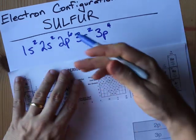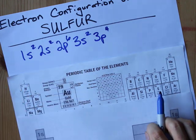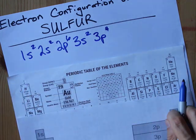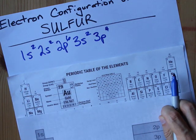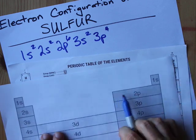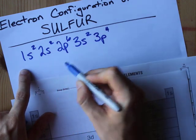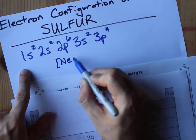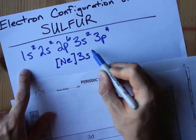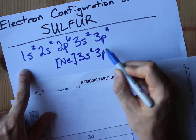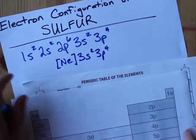Now you may need the shorthand version for sulfur. You go back to the previous noble gas, which is neon, which takes you all the way up through 2P. So you can replace all this stuff up to 2P6 with [Ne]. And then you've got to write out the rest, 3S2, 3P4, if you want the shorthand configuration.